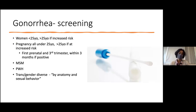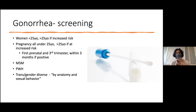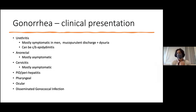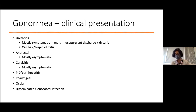Gonorrhea screening guidelines are similar to chlamydia guidelines with a few differences: pharyngeal gonorrhea screening is recommended, unlike chlamydia. There is no recommendation for screening men who have sex exclusively with women due to insufficient evidence. Clinical presentations include urethritis — mostly symptomatic in men with discharge or dysuria, but largely asymptomatic in women — as well as epididymitis, rectal gonorrhea (mostly asymptomatic), cervicitis, pharyngeal gonorrhea, conjunctivitis, and disseminated gonococcal infection, which is now extremely rare.